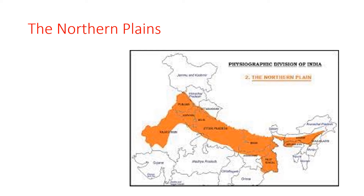The Northern Plains stretch from Punjab in the West to Assam in the East. They cover almost the whole of Punjab, Haryana, West Bengal, Uttar Pradesh, Delhi, and parts of Bihar and Assam.